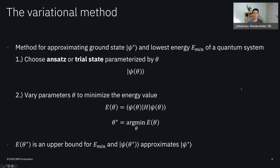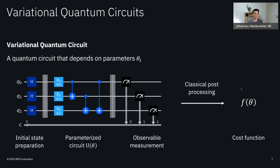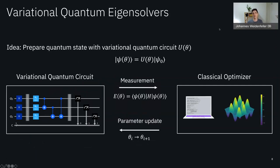Since the ground state is by definition the minimal energy state, any such energy value gives us an upper bound for the actual minimal energy. And if we find the parameters theta for which the trial state energy is lowest, we automatically approximate the ground state Psi-star. The choice of ansatz is very important for the variational method to work. One possible choice is to parameterize our quantum state by a variational quantum circuit — a quantum circuit that depends on some parameters theta. This circuit contains general gates like Hadamard or CNOT gates, plus parameterized rotational gates where the rotation angle is replaced by a parameter theta.